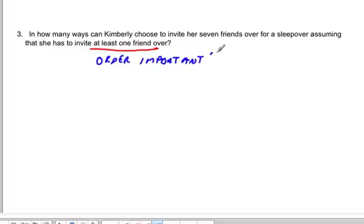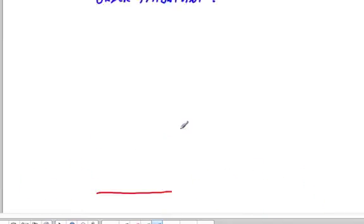And in theory, the order she invites her friends over, so if she invites Rachel over and Tina over, that's the same as inviting Tina and Rachel over. The order that she invites them is not important, so this is going to be a combination.